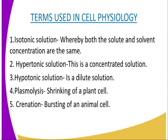Hypertonic solution, in simple terms, is a concentrated solution. Hypotonic solution is a dilute solution. Plasmolysis is the shrinking of a plant cell, whereas crenation is the bursting of an animal cell. These processes take place due to reactions with water in our bodies.